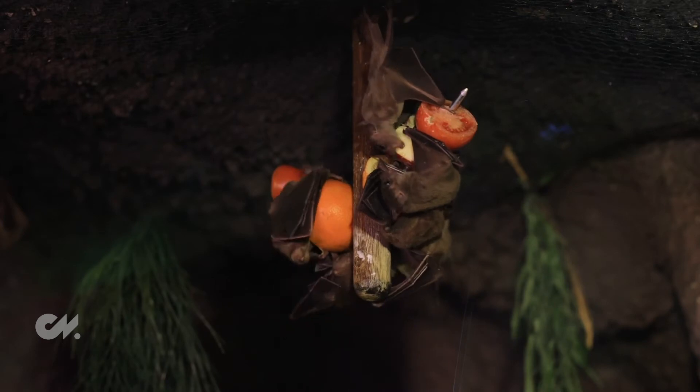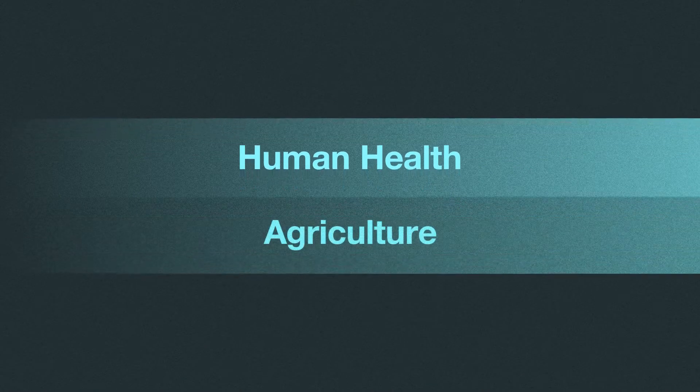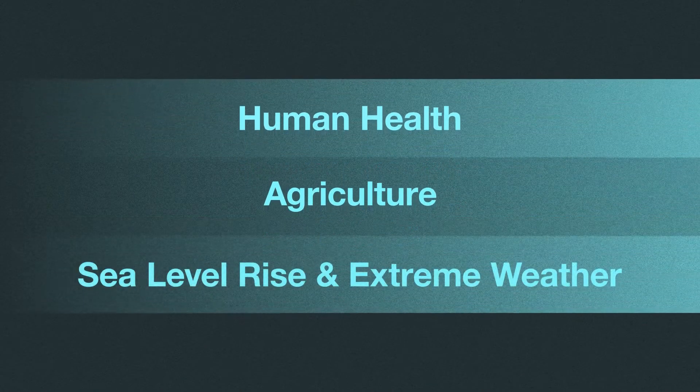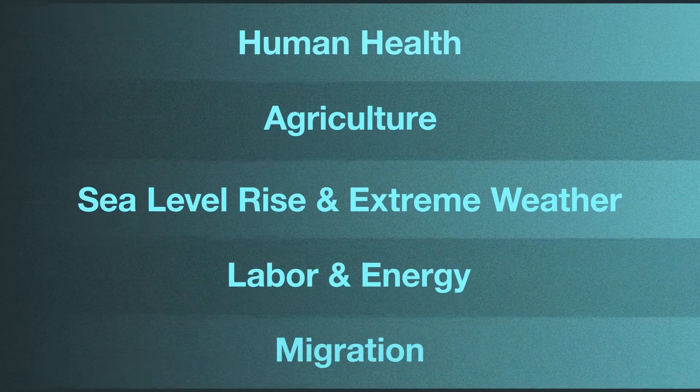In this episode, we'll review current projections of costs across a number of key areas: human health, agriculture, sea level rise and extreme weather, labor and energy, and migration.